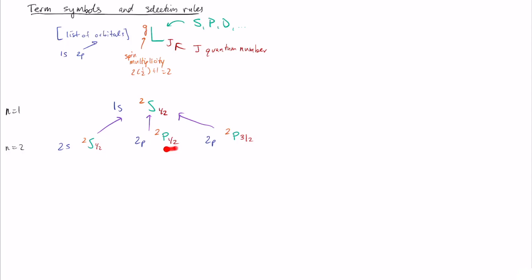Now that we have compact ways to write all of the relevant quantum numbers, we can write down the selection rules cleanly. The three selection rules are: the total angular momentum must change by one (delta l equals plus or minus one). The total spin must not change (delta s equals zero). And the j quantum number must change by one, or delta j equals zero is also allowed so long as j is not equal to zero.